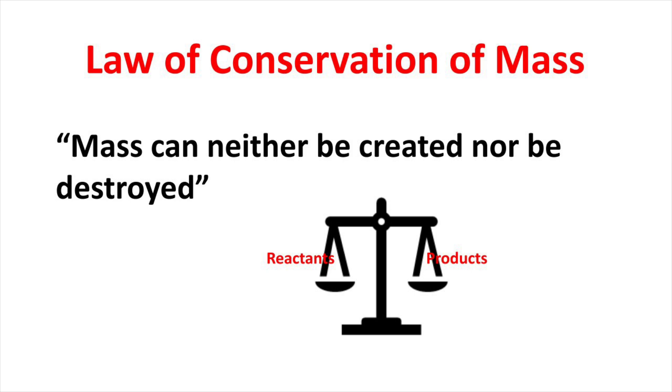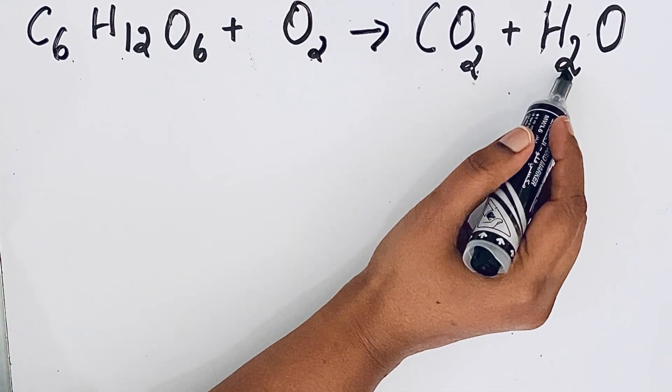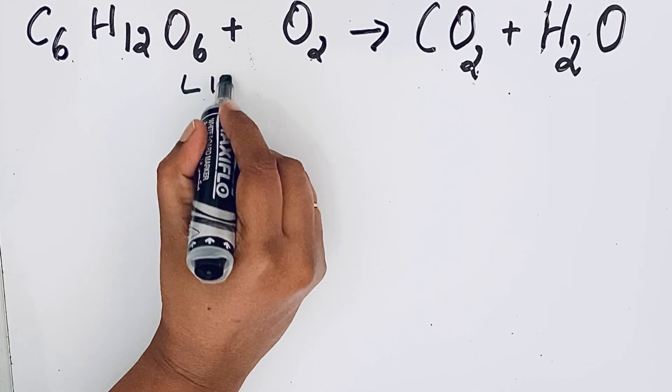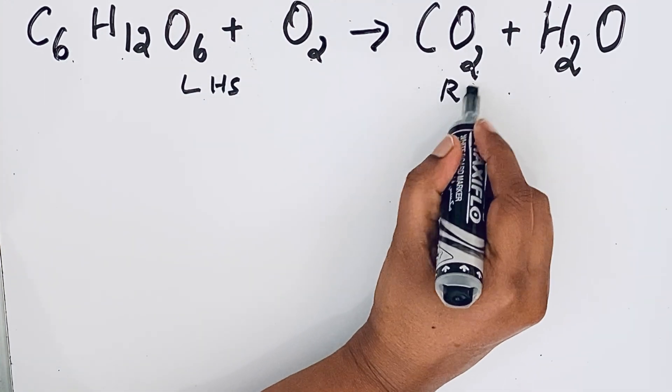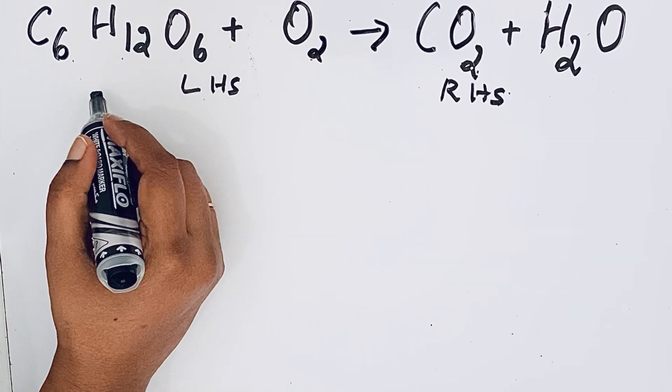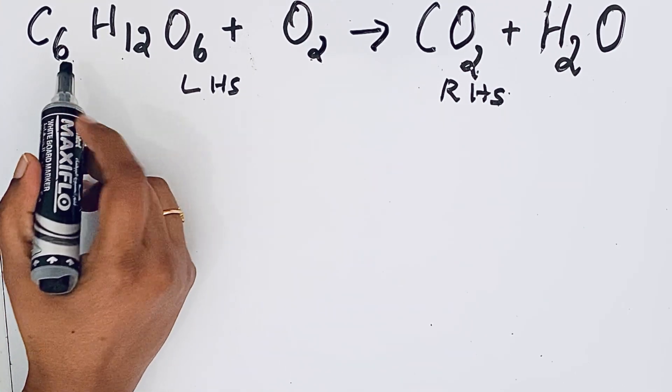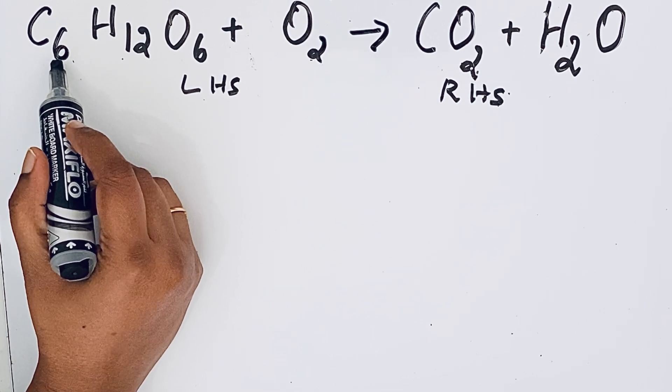This means number of reactants should be equal to number of products in these equations. This side is the reactant side and this is the product side. We can keep it like left hand side and right hand side. Let us write the left hand side atoms of an element one by one. Carbon, you can see that there is a number which is written below. This we call a subscript.